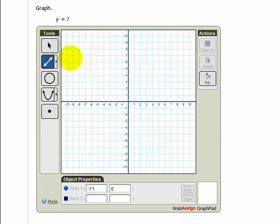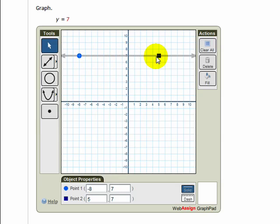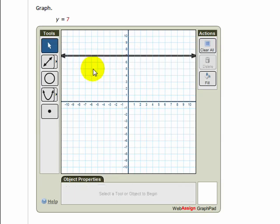So I choose a line, and then choose 2 points along the horizontal line, y equals 7. It doesn't matter which 2 points you choose, of course, because all of the points along this horizontal line are on the line, and thus solutions.